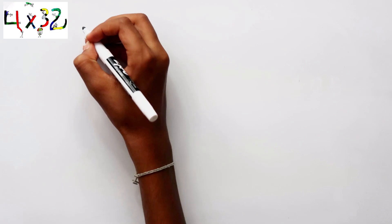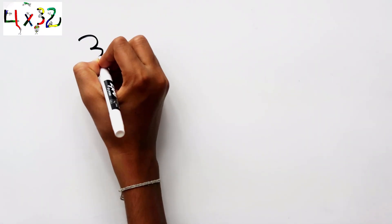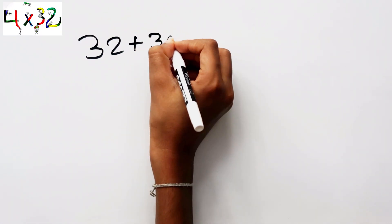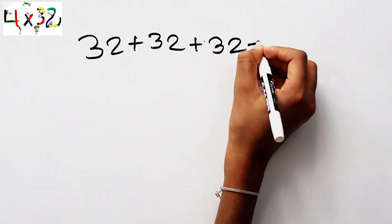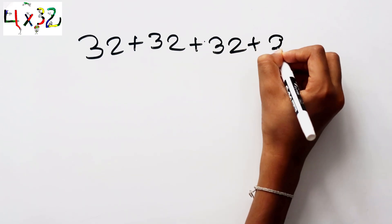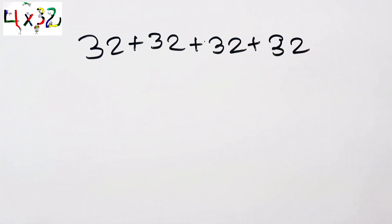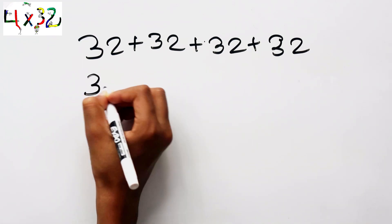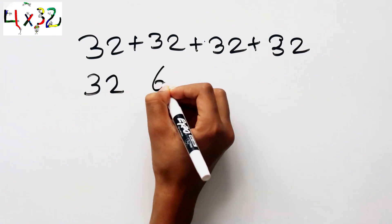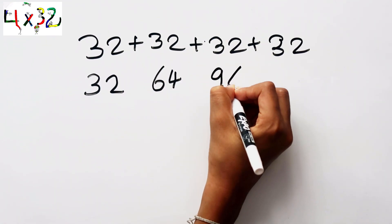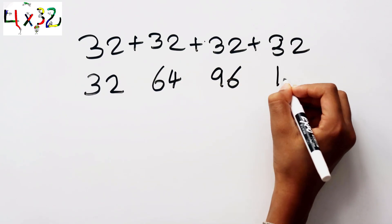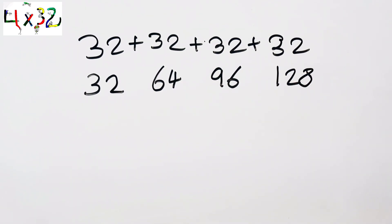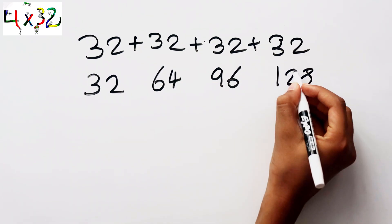Let's do four times thirty-two. Four times thirty-two is nothing but adding thirty-two plus thirty-two plus thirty-two plus thirty-two. Let's add them together: thirty-two, sixty-four, ninety-six, a hundred and twenty-eight. The answer is a hundred and twenty-eight.